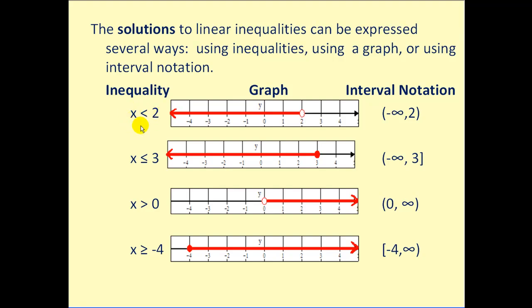any value that's less than 2 would be a solution to this inequality. The graph of that would have an open circle on 2 and an arrow to the left showing any number that we've graphed here would satisfy this inequality. This circle is open because 2 is not a solution to this inequality.